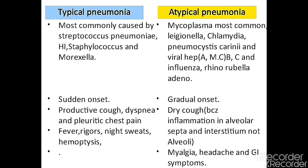Atypical pneumonia presentation is called atypical because the presentations are different. It is gradual onset with a chronic history — not sudden onset. There is a dry cough because inflammation is in the alveolar septa and interstitium, not in the alveoli. There will be myalgia (muscle pain), headache, and GI symptoms. A patient may present with a chronic history.